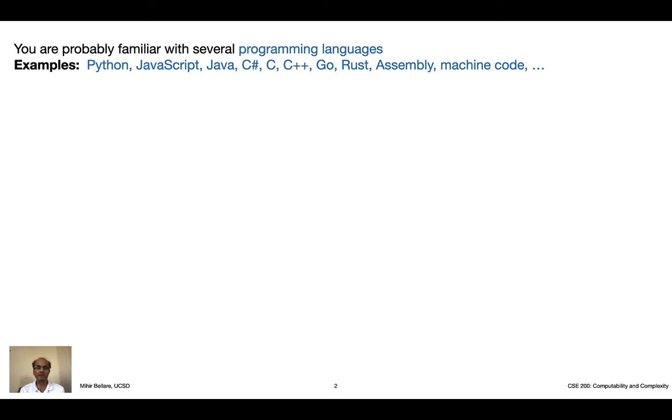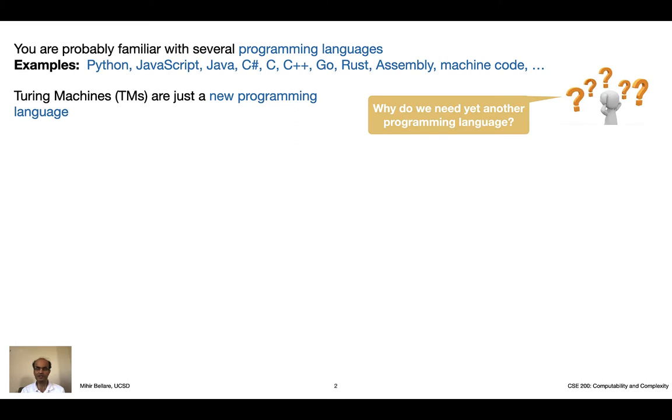In case this notion of some machine is scary, let's back up a bit. You're probably familiar with programming languages. You probably know several, you've written code in several: Python, JavaScript, Java, various C variants, Go and Rust, and so forth. I also include in this list lower level languages, assembly code, machine code, and there's a reason for that. The long and short of it is that Turing machines are really just a new programming language. You're just learning a new syntax in which to do programming. However, that does raise a question: why on earth do we want yet another programming language? Don't we have enough already?